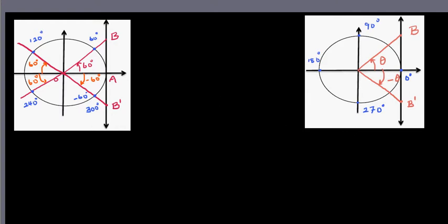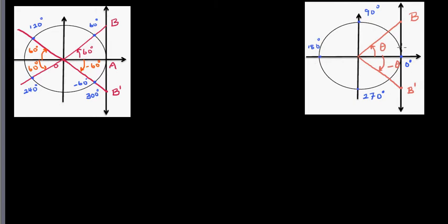In my previous video I explained how tan θ — so tan theta — is the length of line segment AB. In a unit circle of radius 1, with center O, OA equals 1. I explained that tan theta is the length of the line segment AB.